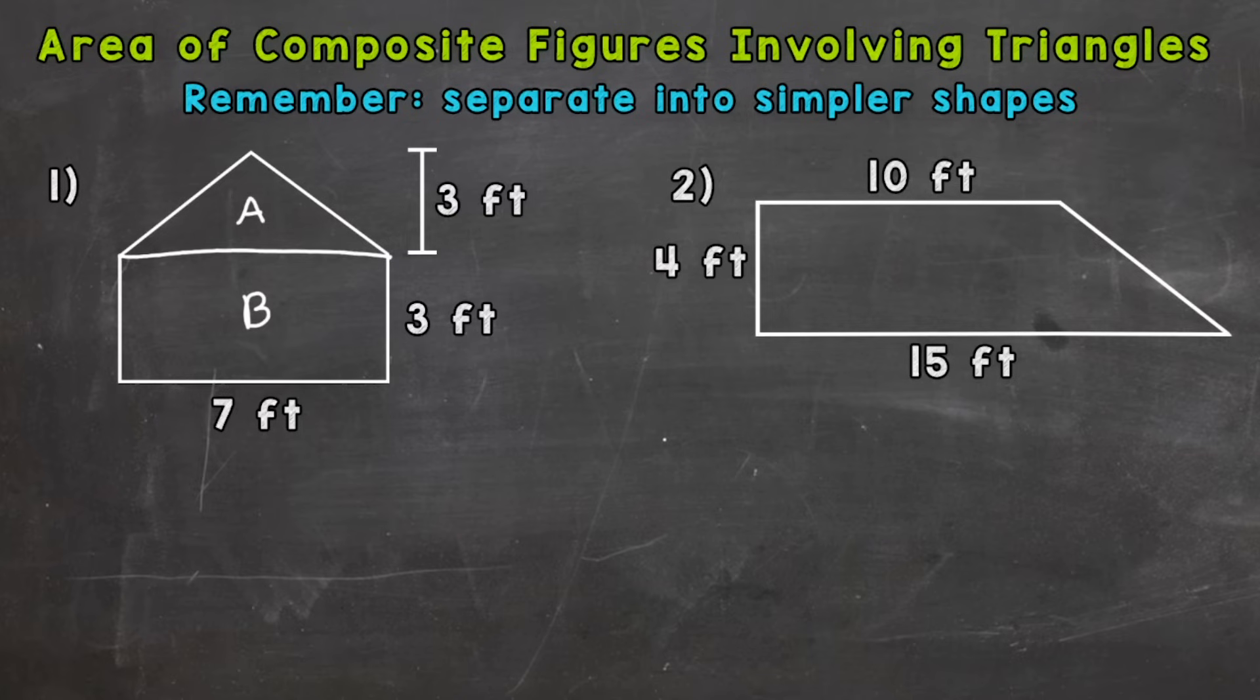We know how to find the area of a triangle and a rectangle. We need to find the area of A and B, add those together, and we have the total area of that composite figure. I labeled them A and B to keep everything organized. Let's start with A. Our formula for the area of a triangle: area equals base times height divided by 2.